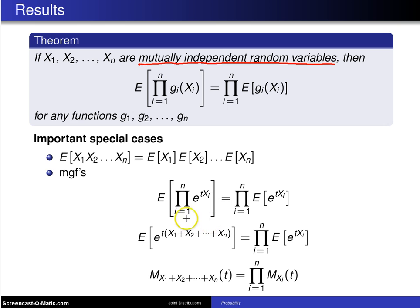This expression on the left is the moment generating function of the sum, also known as a convolution, of X1 up to Xn.